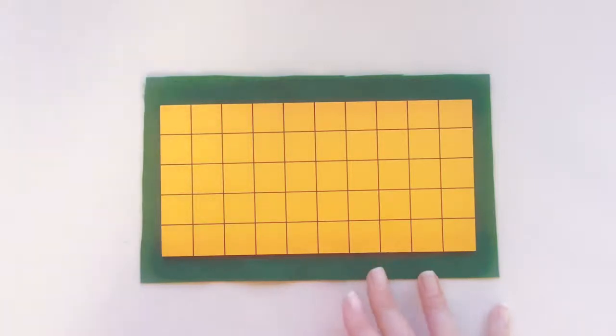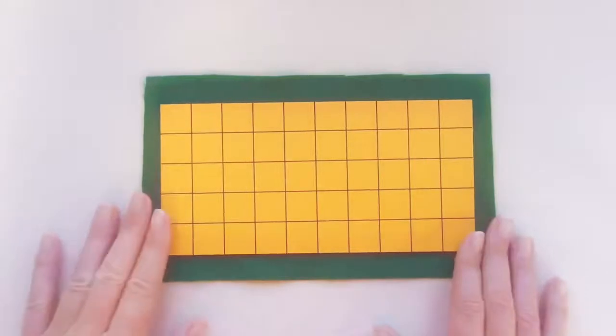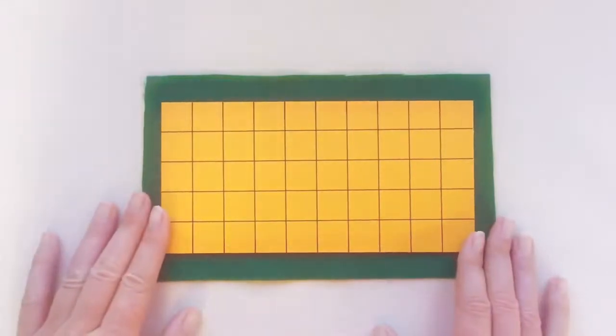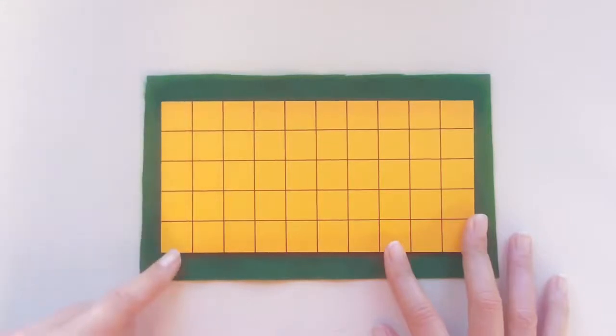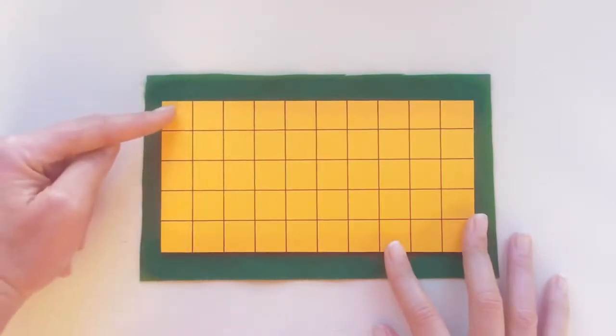Now with this rectangle we're going to do the same thing by counting how many squares it has on its short side. So let's go ahead and count those: 1, 2, 3, 4, 5.